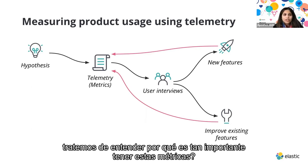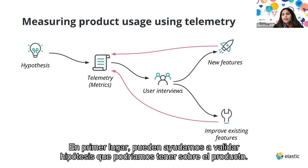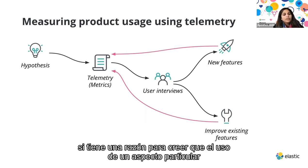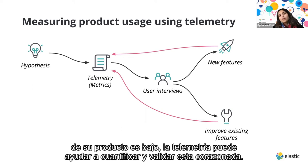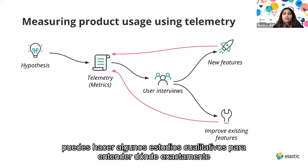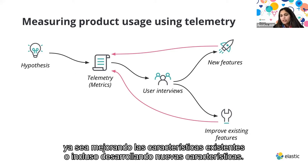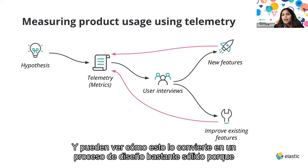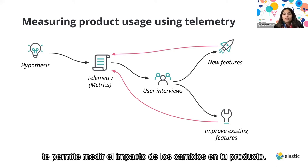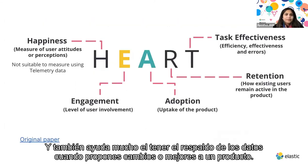First, let's understand why it's important to measure these metrics. The advantages are at least twofold: first, they can help validate hypotheses about the product. For example, if you believe usage of a particular feature is low, telemetry can quantify and validate that hunch. Once validated, you can do qualitative studies to understand the gaps and figure out how best to bridge them — either by improving existing features or developing new ones. This makes for a solid design process because you can measure exactly how your changes are impacting the product.